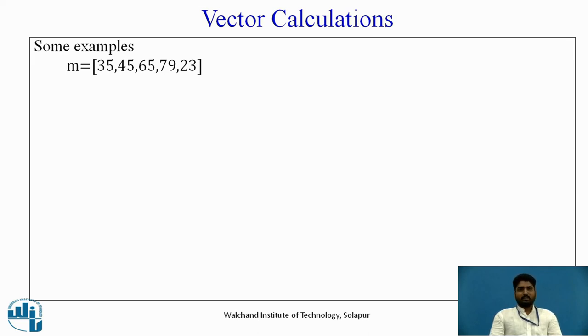Here I have taken m equals rectangular bracket 35 minus 35 comma 45 comma 65 comma 79 comma 23. Then press enter, the vector is defined in Scilab, it shows m equals all the 5 elements with full stop.